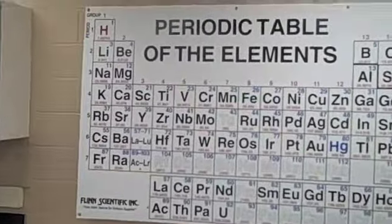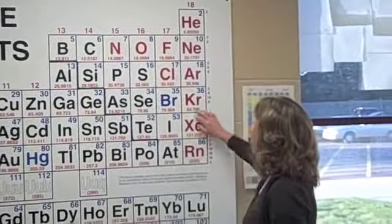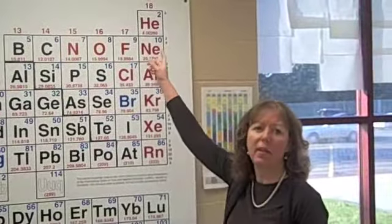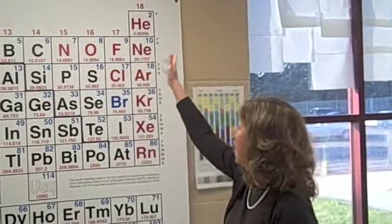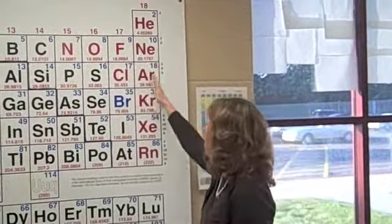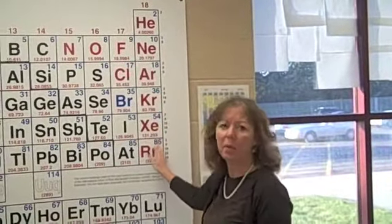So for example, these elements here all have eight in their outer shell except for helium. Helium has two, but it still has a full outer shell, so all of these elements here are very stable and don't want to react.